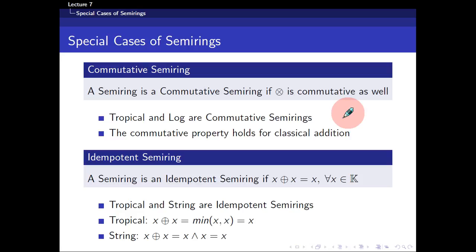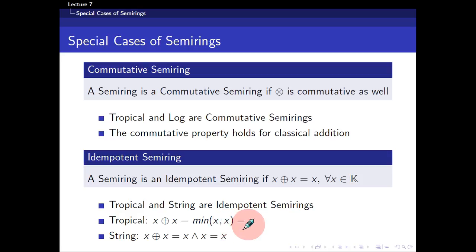The next special semi-ring is known as an idempotent semi-ring. An idempotent semi-ring is one where x plus x returns x, for all x in the set K. Tropical and string semi-rings are idempotent. In a tropical semi-ring, x plus x is equivalent to taking the minimum between x and x, which is just x. For example, the minimum between 3 and 3 returns 3 — the minimum of a value with itself is always itself. So a tropical semi-ring is also an idempotent semi-ring.